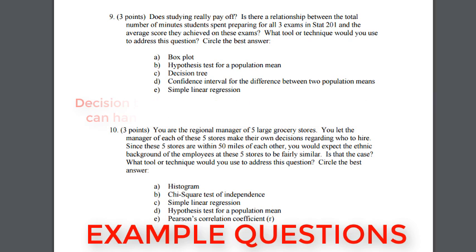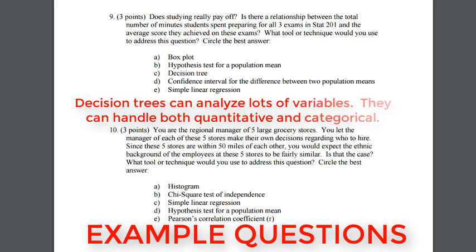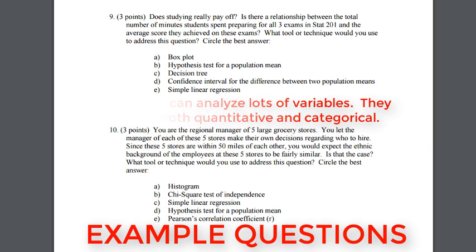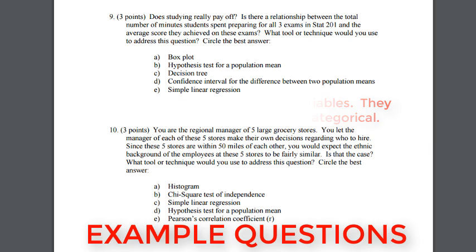A decision tree would take a whole bunch of variables. For example, what is the best way to predict someone's grade in a class? We collect 20 different variables and we want to know the relationships between them and how we can explain the grades someone makes in a class. Decision trees handle a lot of variables — a lot of X's — and try to explain some Y.